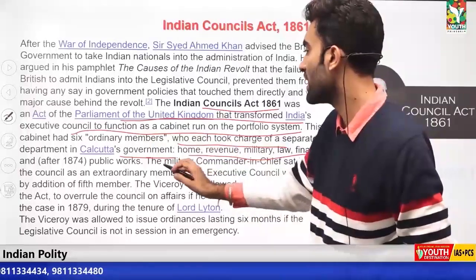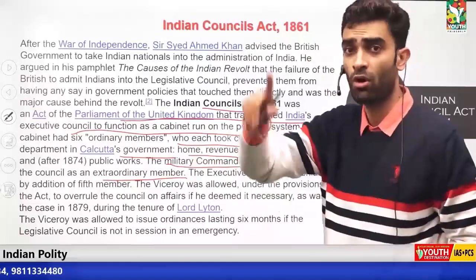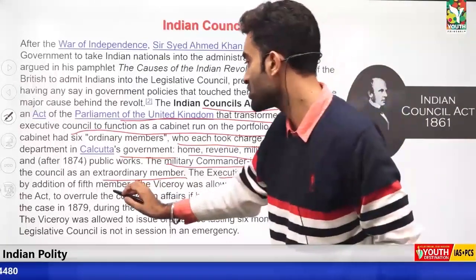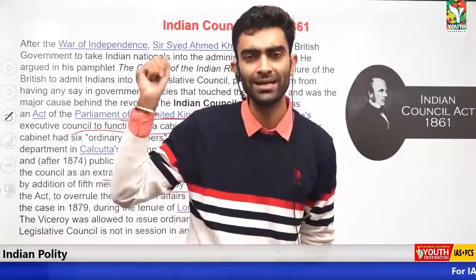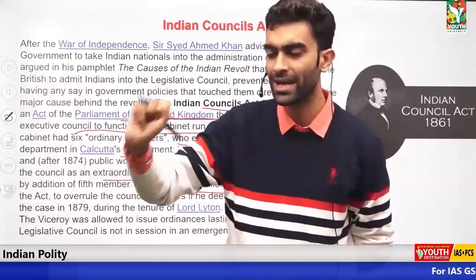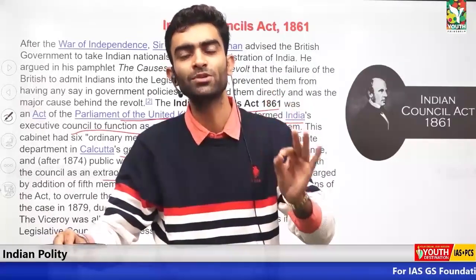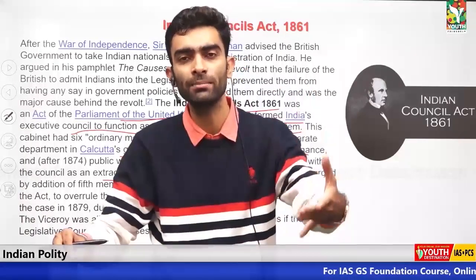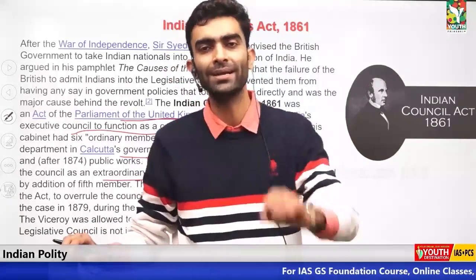The executive council was enlarged by the addition of a fifth member, and the Viceroy was allowed additional powers under its provisions. The main points to remember about the Indian Council Act 1861 are: establishment of the cabinet or portfolio system, development of separate ministries, and the addition of an extraordinary member — the Commander-in-Chief — along with the Viceroy, who had different kinds of powers to take decisions in the entire cabinet.